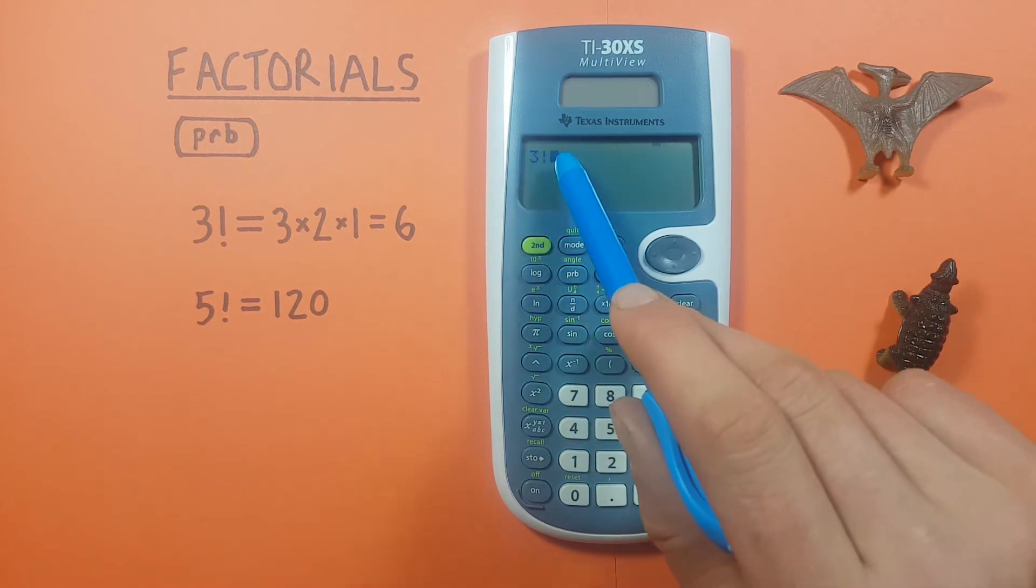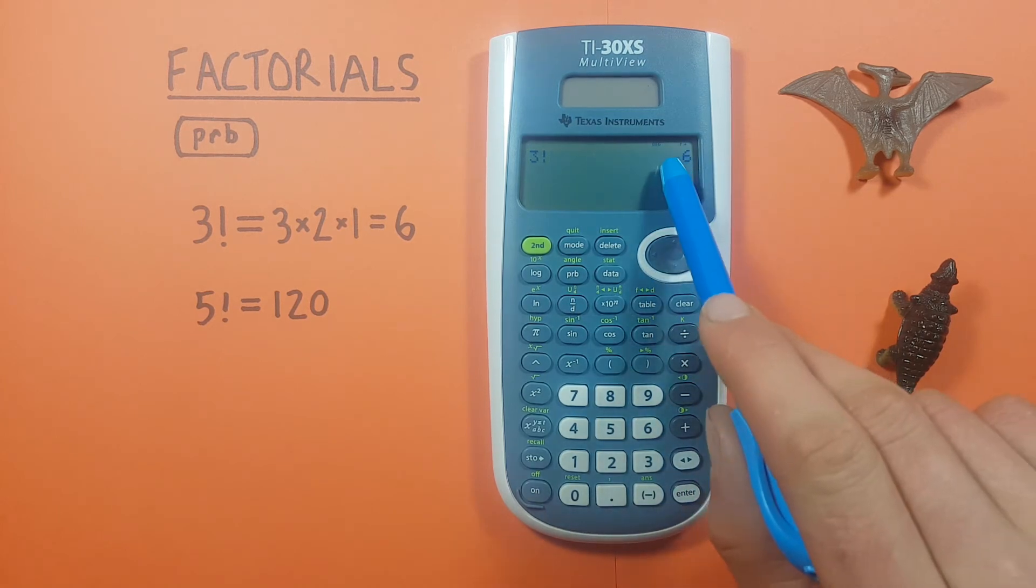And we see we get the factorial symbol on the screen. We have 3 factorial there. We can press enter and we get the result of 3 factorial is equal to 6.